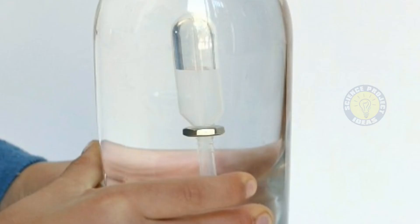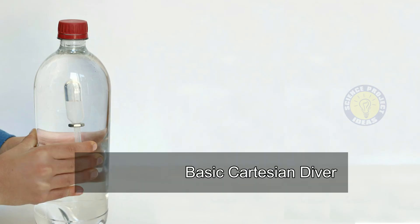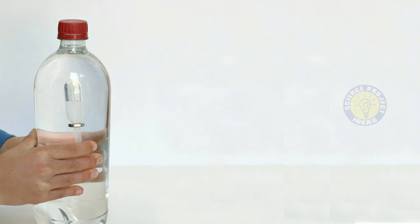Once you've filled your pipette diver with water and have a bubble of air inside the top, drop it into your large bottle of water. Screw the cap on securely. The Cartesian diver should float in your bottle.